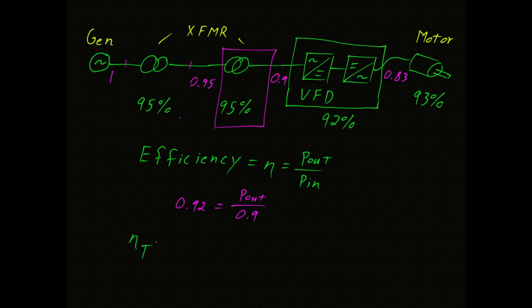We could go one step further, but I think you see the pattern. The total system efficiency is equal to the product of the individual efficiencies. So in this case, it's 0.95 times 0.95. That takes care of both transformers. The variable frequency drive is 0.92, and the motor is 0.93, which gives us a total system efficiency of 77%.